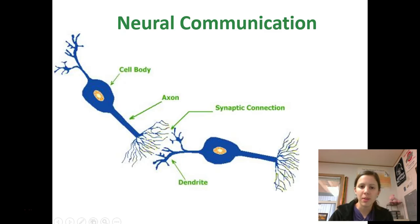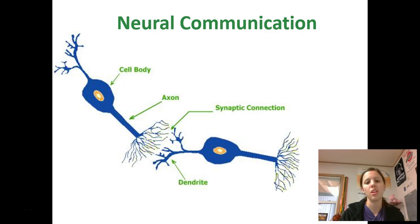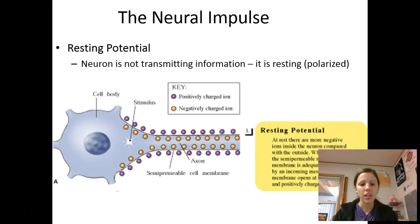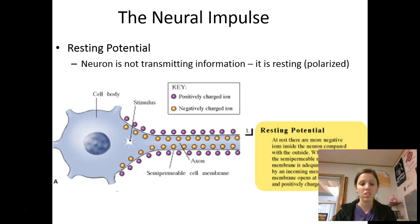The last thing we're going to talk about today is neural communication. We've looked at the actual structure of the neuron and the three types, but now how do neurons actually communicate information between each other? It all starts before the neuron even communicates — what we say is it is at resting potential, which means the neuron is basically doing nothing, it's not transmitting information, and we say at this point the neuron is polarized.